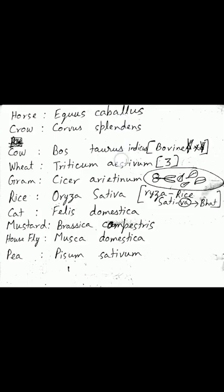There are some common animals and plants for which the scientific name is asked. Scientific name consists of two parts — it is a two-part nomenclature, which also falls under the study of taxonomy. The first part is called genus and the second part is called species. Humans are Homo sapiens — Homo is the genus and sapiens is the species.